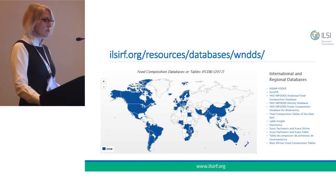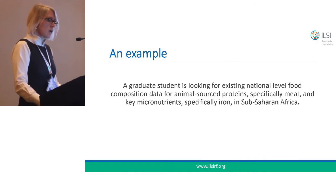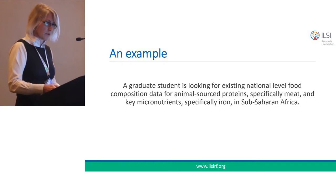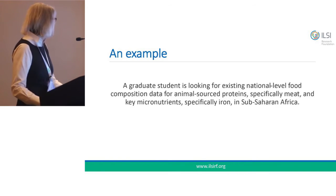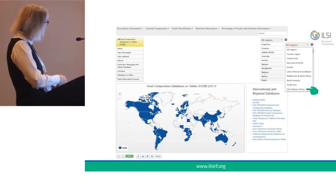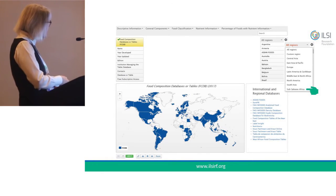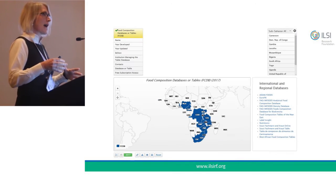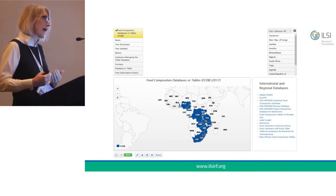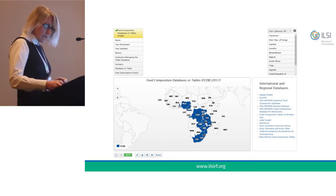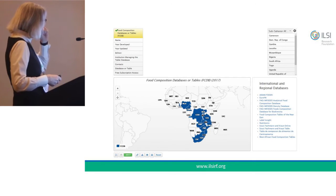Here's an example of how you could use this resource. A graduate student is looking for existing national-level food composition data for animal source proteins, specifically meat, and for the nutrient iron, in Sub-Saharan Africa. She goes to the homepage and uses a drop-down box to select legumes and Sub-Saharan Africa. What she recovers is a zoom-in on the map of countries in Sub-Saharan Africa where WINS currently has information about databases or tables.